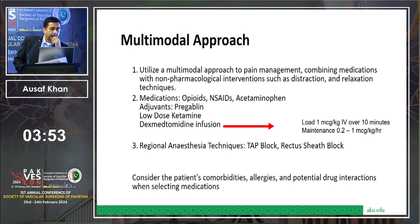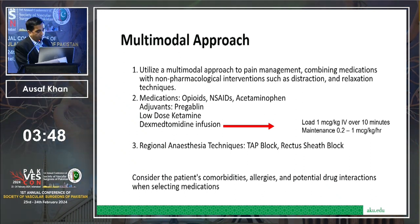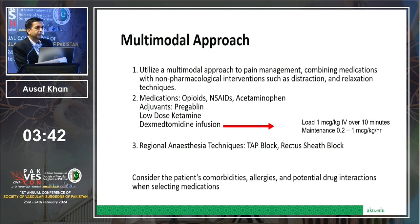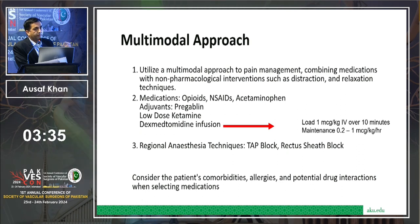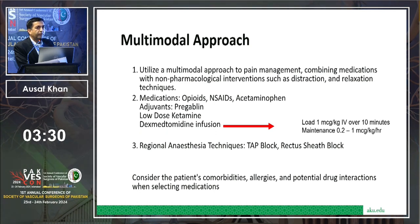Regional anesthesia techniques can also be performed by vascular surgeons while closing the patient. You can infiltrate local anesthetic — 20 mL of bupivacaine — into the fascial plane before closing the rectus sheath. This provides very good pain relief for the next 24 hours.